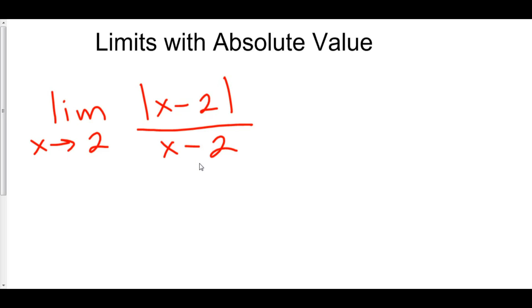So, here is how we analyze absolute value functions. We're going to look both at the right-hand side of 2 and the left-hand side of 2, just as we did with vertical asymptotes.